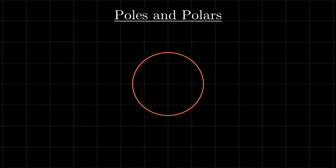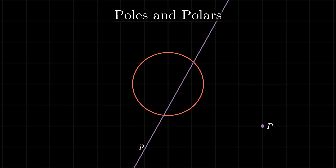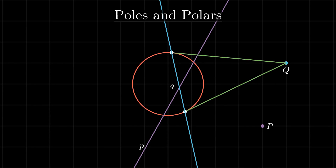Given a circle with center O and a line that intersects the circle, draw tangents at the points where the line intersects the circle. The point of intersection of these tangents is defined as the pole of the given line. Conversely, the polar of a point outside the circle is given by constructing tangents from that point to the circle; the line joining the tangent points gives the polar line of that point.